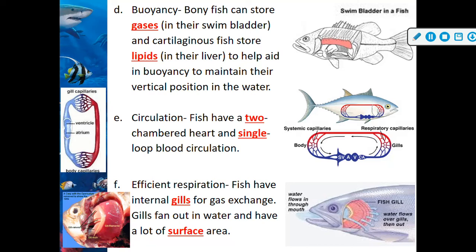Efficient respiration: fish have internal gills for gas exchange, whereas we have lungs they have gills. Gills fan out in water and have a lot of surface area. We'll get into the structure of gills and how a fish breathes and pushes water across the gills at a later date — this is all just an overview to give you some base information.